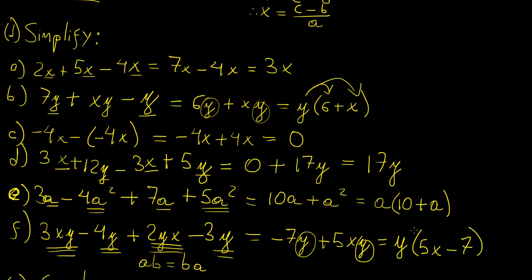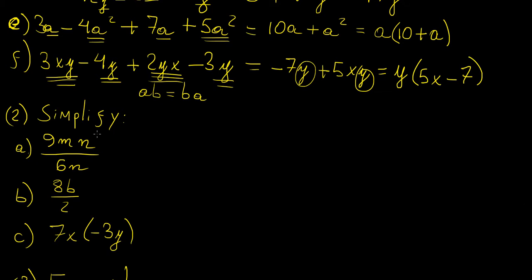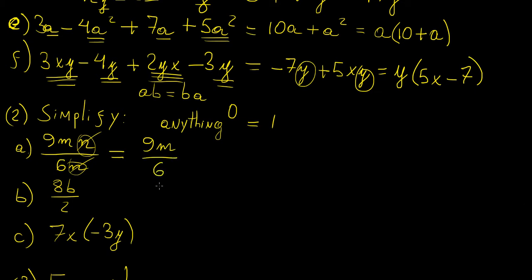Now we have to simplify more expressions. When dividing two expressions, we can subtract powers of the same variable. In this case, n divided by n is n to the power of 0, which is 1, so those cancel out, leaving 9m over 6. We can simplify that fraction further — both are divisible by 3 — giving 3m divided by 2.